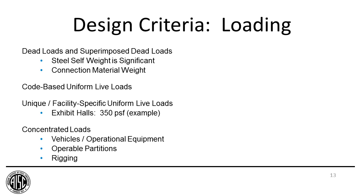What's unique about long-span structures is that the self-weight of the structure is often significant in the design. In addition to the weight of the members, the connection material weight often becomes important. After determining dead loads, we move on to code-prescribed uniform live loads, but often long-span structures have unique facility-specific uniform live loads. In the convention center world, it's common that an exhibit hall floor has a uniform live load of 350 pounds per square foot — typically not prescribed by the building code but facility-specific.